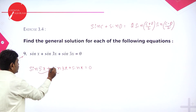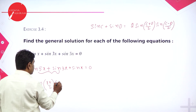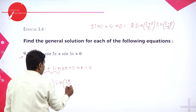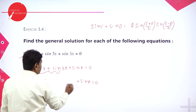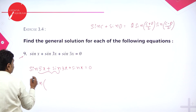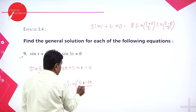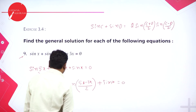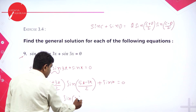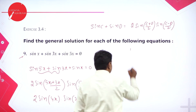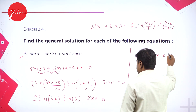Using sin c plus sin d equals 2 sin((c+d)/2) into sin((c-d)/2): for sin 5x plus sin 3x, that gives 2 sin((5x+3x)/2) into sin((5x-3x)/2), which is 2 sin 4x into sin x, plus sin x. Taking sin x common leaves sin x times (2 sin 4x plus 1) equals 0.